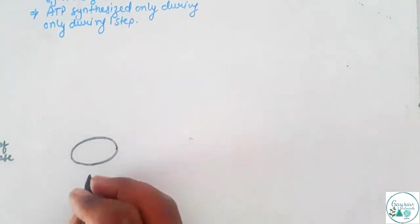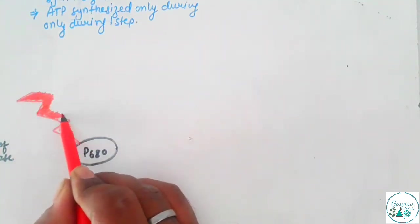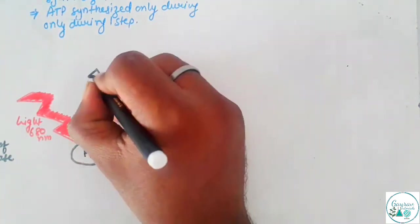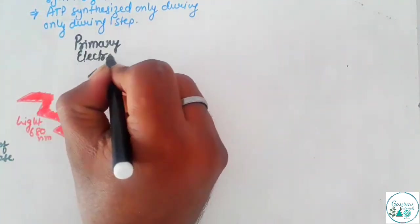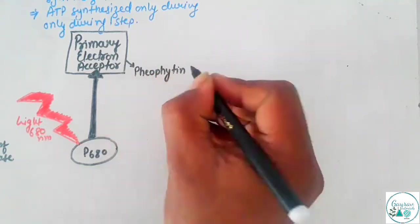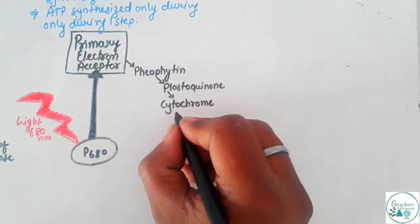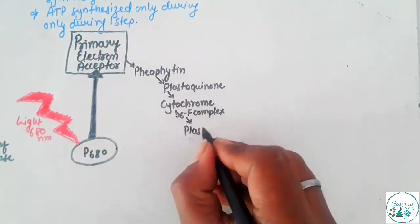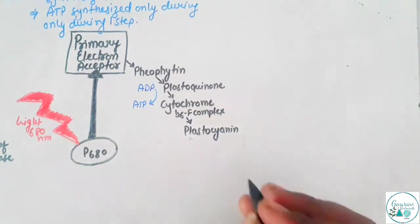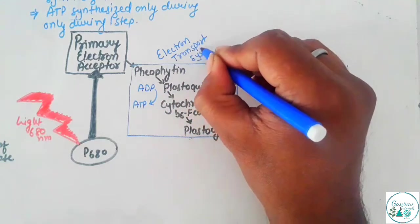Diagrammatically, we find that Photosystem 2 is present first, followed by PS1. PS2 has its reaction center as P680, and whenever light of 680 nanometers falls on it, it causes the electrons in P680 to get excited and released. This released electron from P680 is accepted by the primary electron acceptor, which passes the electron to a molecule called pheophytin. From pheophytin, the electron moves into plastoquinone, then into the cytochrome b6f complex, and from the b6f complex it is passed to plastocyanin. Every time the electron is passed from plastoquinone to the cytochrome b6f complex, it produces ATP from ADP. These four molecules — pheophytin, plastoquinone, cytochrome b6f complex, and plastocyanin — are referred to as the electron transport system.